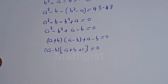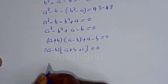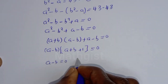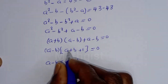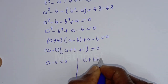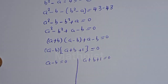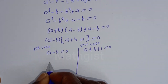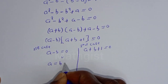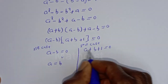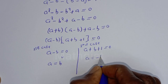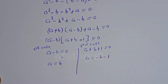There are two cases. The first case is A minus B is equal to 0, which gives A is equal to B. The second case is A plus B plus 1 is equal to 0, which gives A is equal to minus B minus 1.